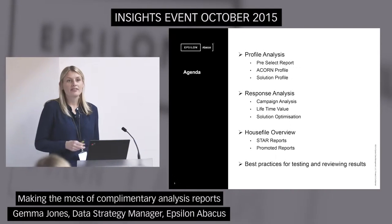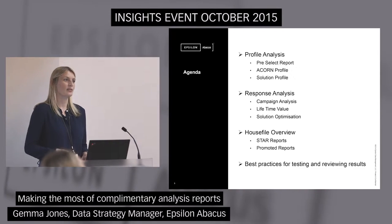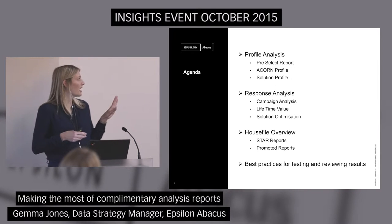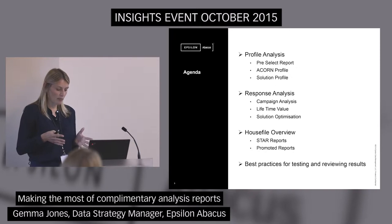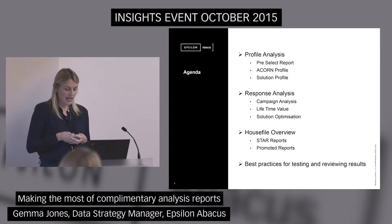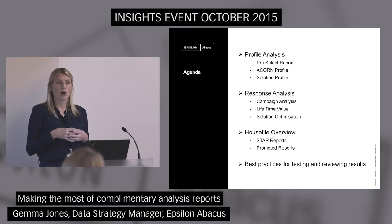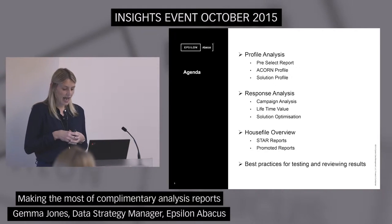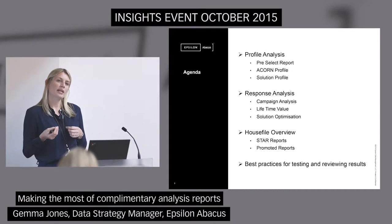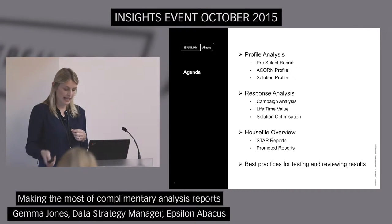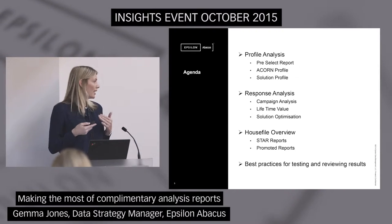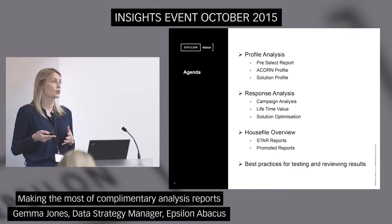Within this agenda, there isn't time today to cover all the areas that we'd like to talk about, so please speak to your client representative if I'm not including something you're particularly interested in. But the three areas of insight I want to cover today are: the profile analysis to help select the best names and models for your campaigns, the response analysis to understand in detail what happens once your campaign is completed, and house file overview to gain greater insight into how your house file relates to the Abacus Alliance and how we can help you find further opportunities. And at the end, I want to give you a few best practices in how we at Abacus review your campaign analysis when looking at different source data.